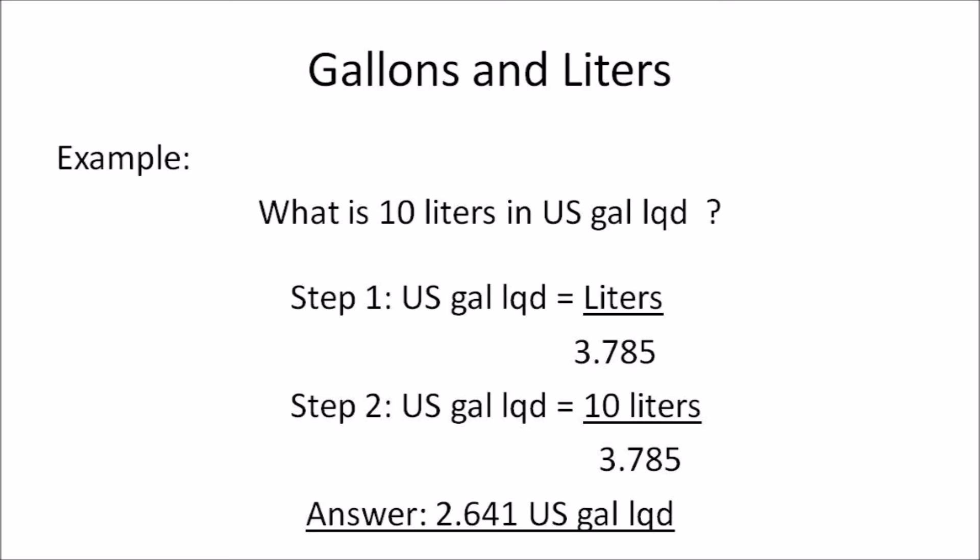Example one: what is 10 liters in U.S. liquid gallon? Step one, write the formula first: U.S. liquid gallon is equal to liters divided by 3.785. Step two, substitute the value: U.S. liquid gallon is equal to 10 liters divided by 3.785. The answer you get is 2.641 to 3 decimal places U.S. liquid gallon. This is how you convert liters to gallons.